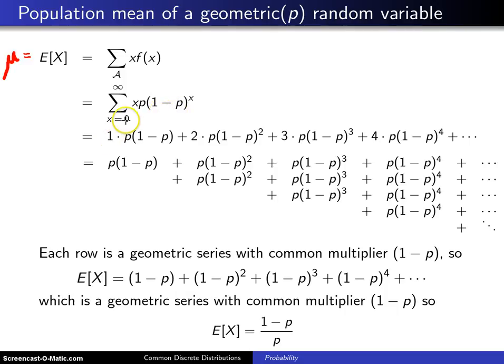If you start writing out the terms, when x equals 0 notice we have nothing, so that goes away. But when x equals 1, we get 1 times p times (1 minus p). Then for the next term, we get 2 times p times (1 minus p) squared, plus 3 times p times (1 minus p) cubed, et cetera.